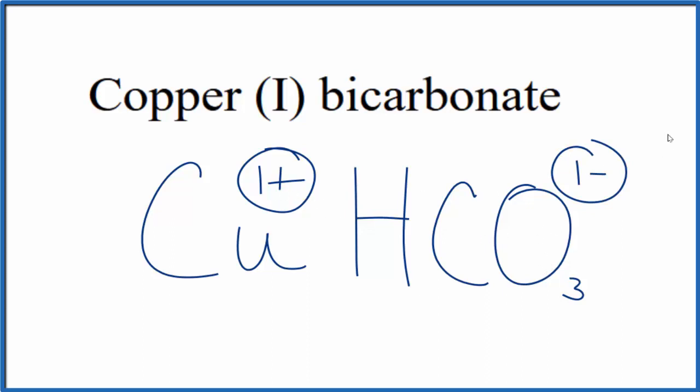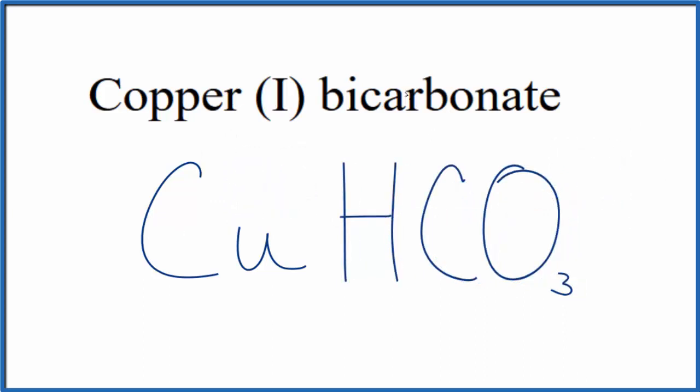1 plus, 1 minus, that adds up to 0. So this is the formula for copper 1 bicarbonate, CuHCO3. And again, you'll also see this as copper 1 hydrogen carbonate, both names are okay.